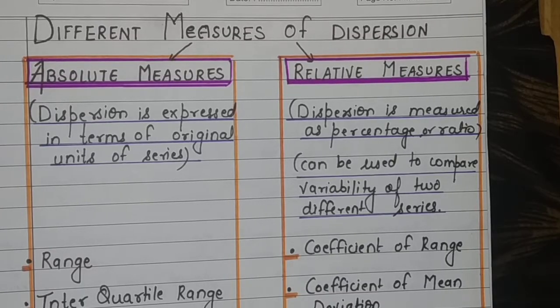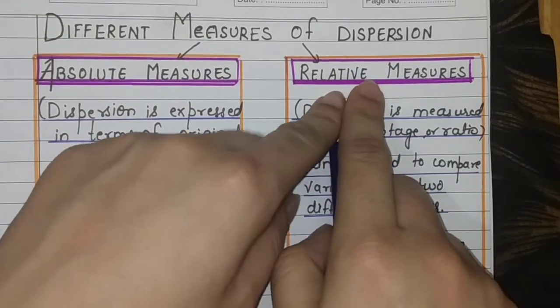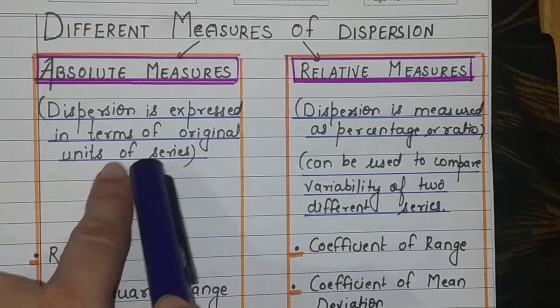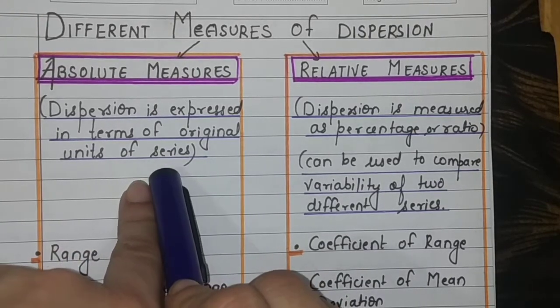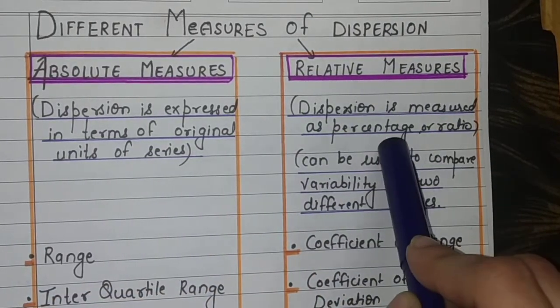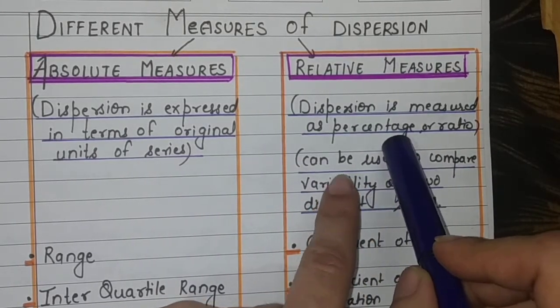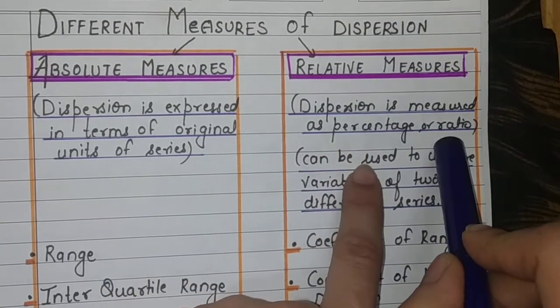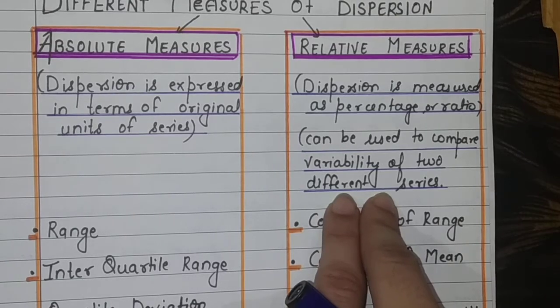Now let's talk about different measures of dispersion. Basically there are two measures: absolute measures and relative measures. Absolute measures are those measures where we express our answer in the original units. If your data was in rupees, your answer will also be in rupees. But relative measures are those measures where dispersion is measured as the percentage or the ratio. Even though the data was in rupees or population numbers, your answer finally in relative measure is in percentage or ratio format. And the use of relative measures is when we compare two or more series.